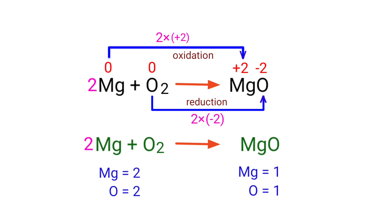In this equation, we need to balance the magnesium and oxygen atoms. To do this, we need to put a coefficient of 2 in front of MgO.